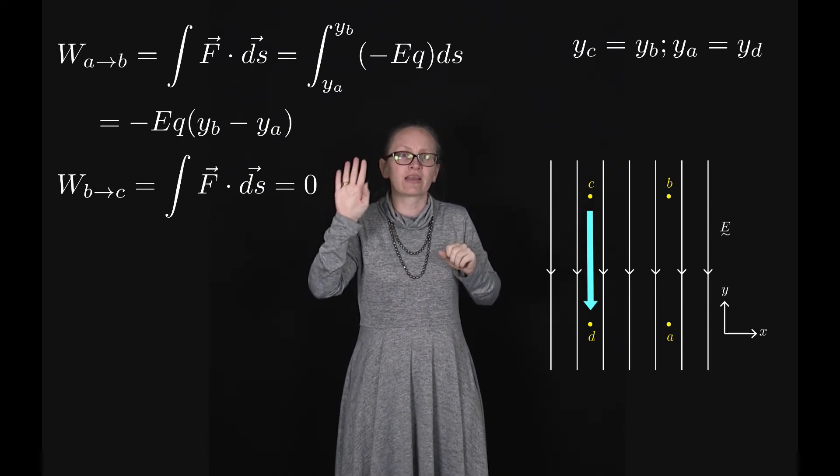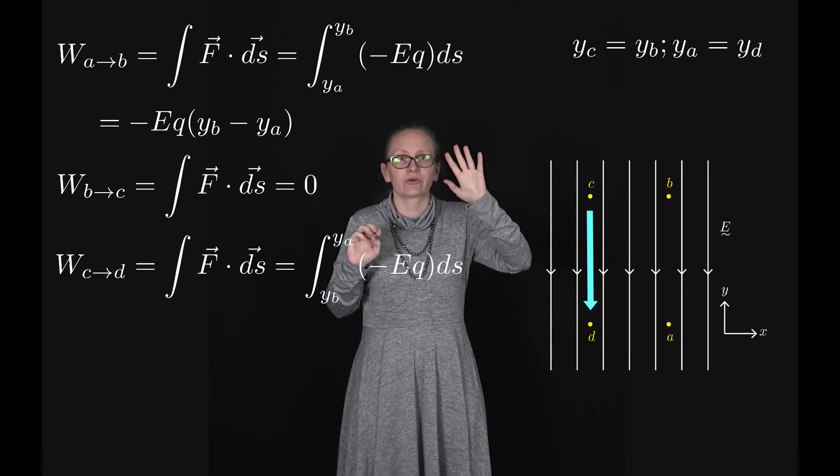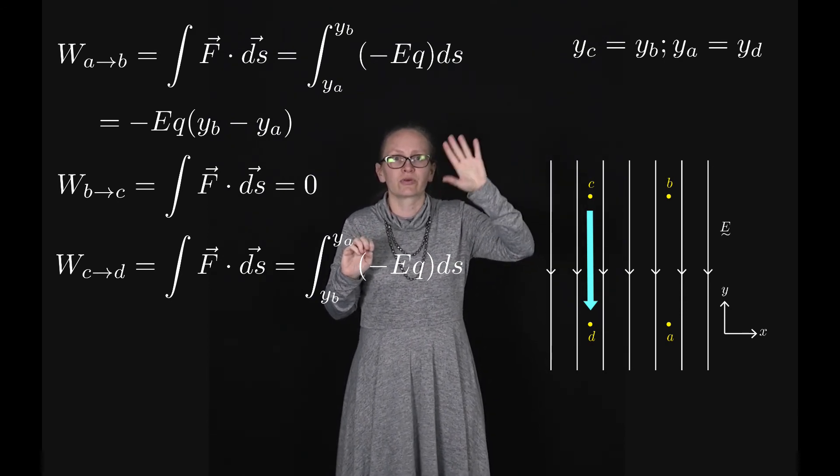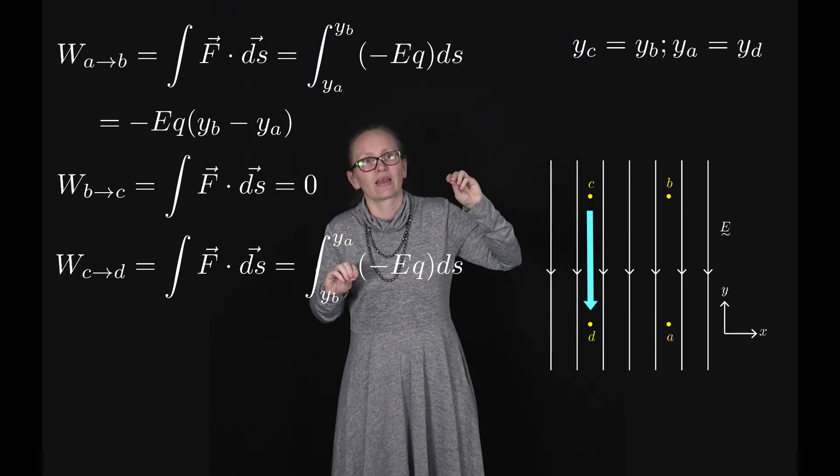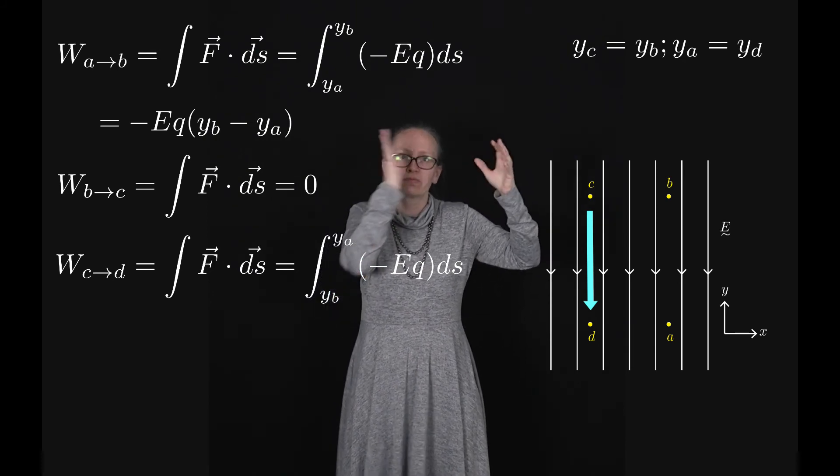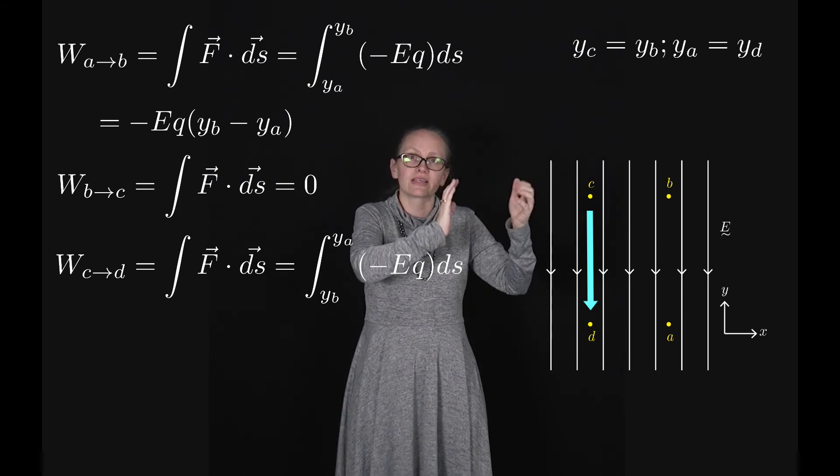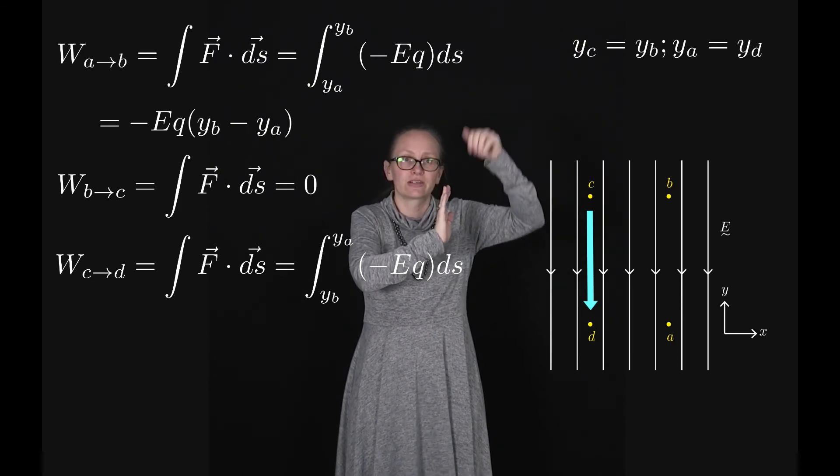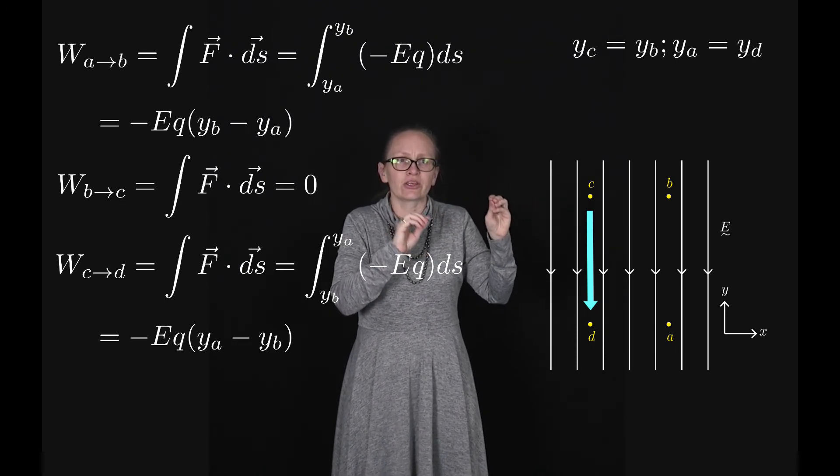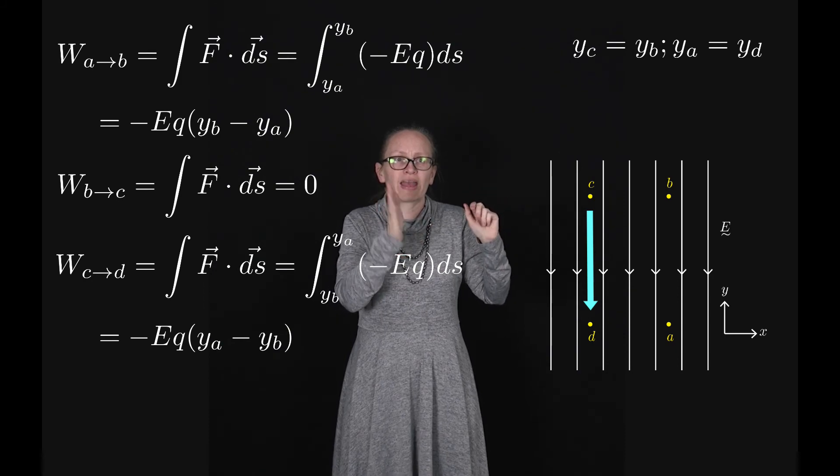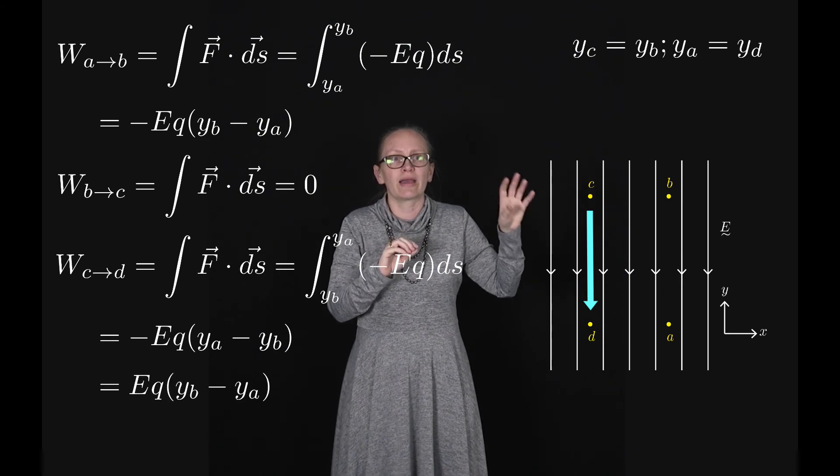So the work done by the electric field is equal to minus the integral of the force dot ds which is equal to the integral, we're ending at ya and we're starting at yb. So those are the limits on our integral times minus Eq is still minus Eq because the electric field is still going down in the negative y direction ds, which is equal to minus Eq times ya minus yb which we can also write as Eq times yb minus ya.